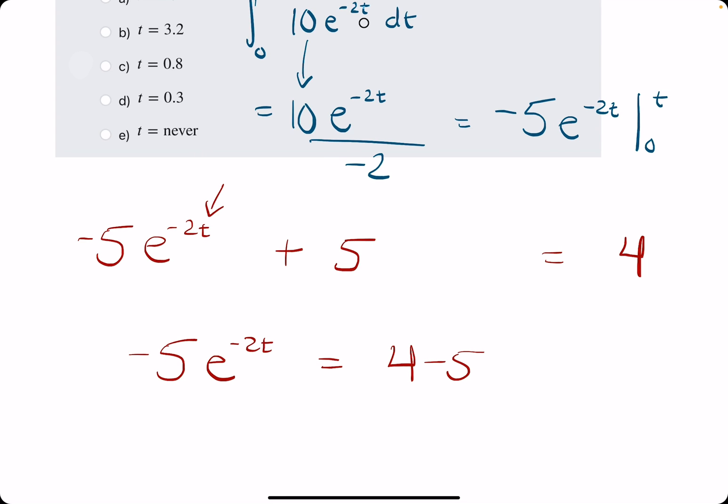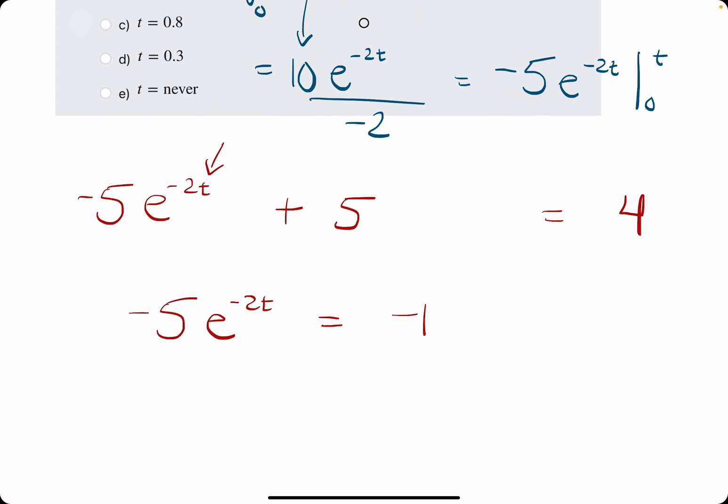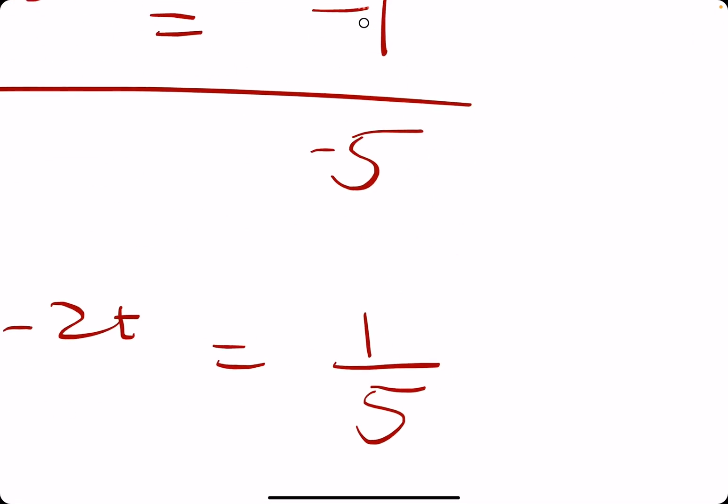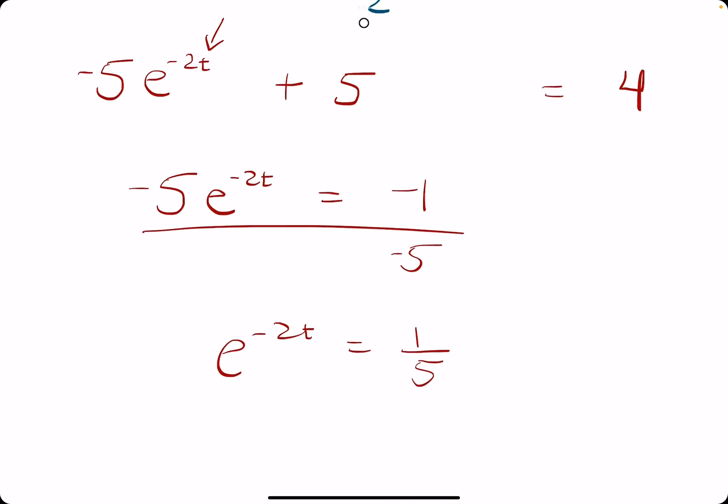So lots of simplifying to tell us that we subtract 5 to the right side. 4 minus 5 is negative 1. We divide by negative 5 to get the e by itself.